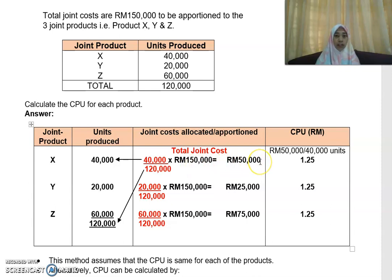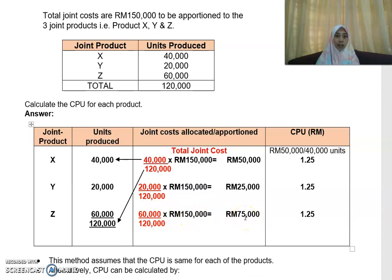You do the same for Y: 20,000 divided by 120,000 times RM150,000 gives you RM25,000. For product Z, that is 60,000 divided by 120,000, which is 50%, times RM150,000, giving RM75,000. So X takes RM50,000, Y takes RM25,000, and Z takes RM75,000. Adding these up — 50,000 plus 25,000 plus 75,000 — gives back your total joint cost of RM150,000.